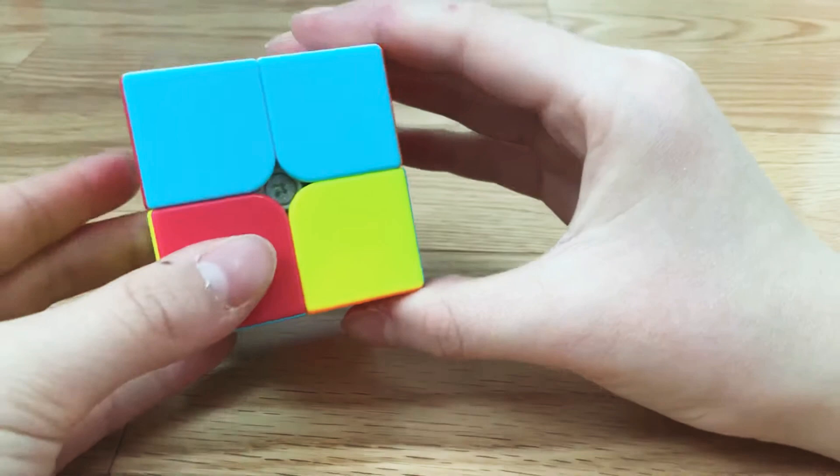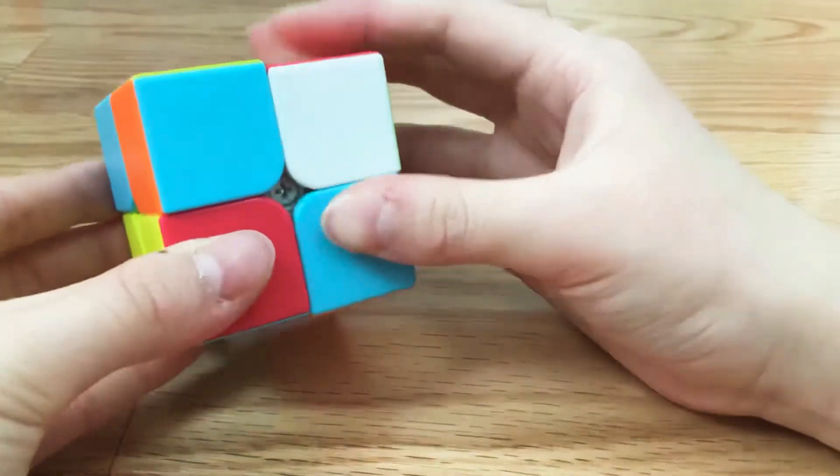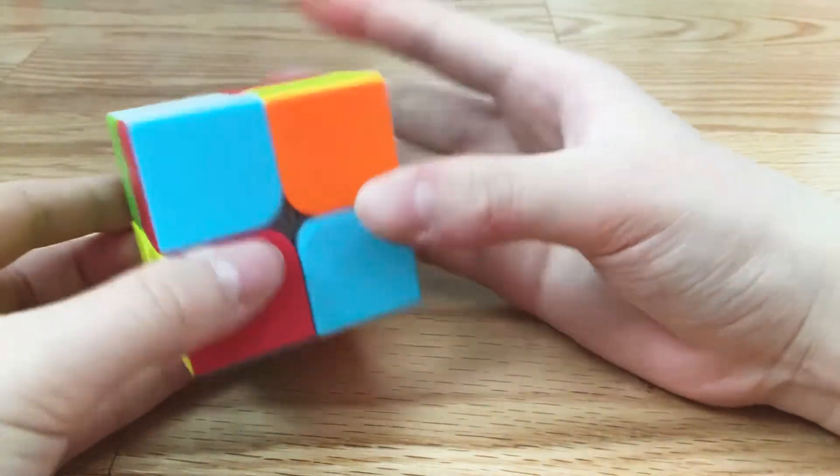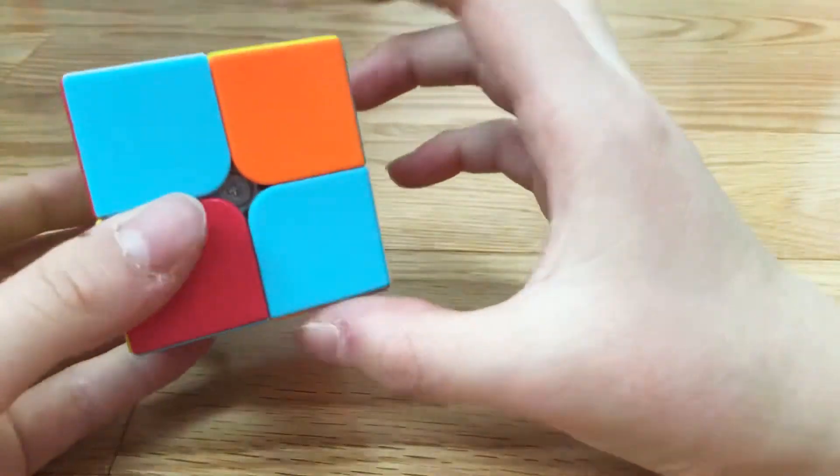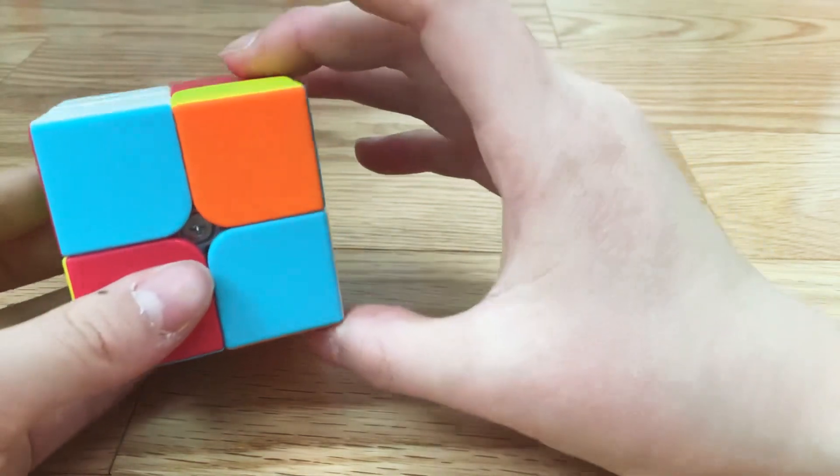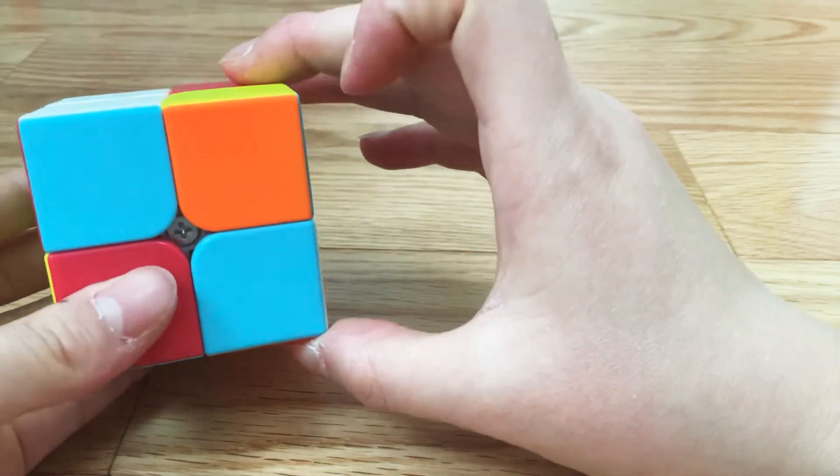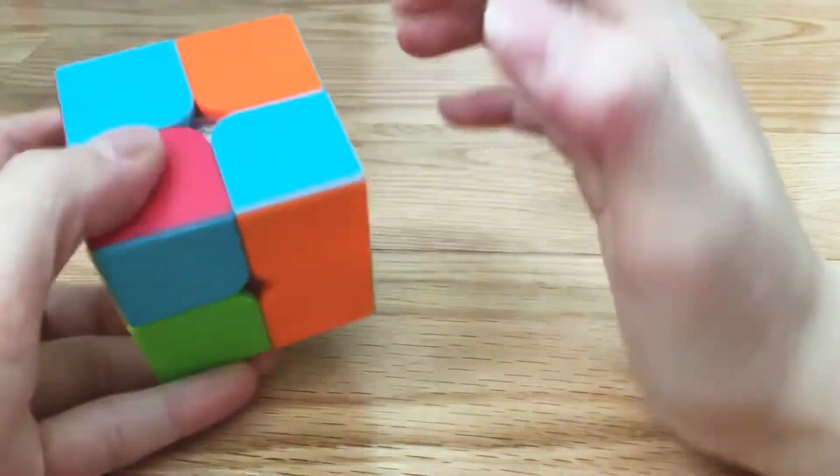So all you have to do is this, this, that, that. So now it's kind of messed up, but don't worry, it will get solved later. So you're gonna keep repeating this tiny algorithm with four moves until this yellow part is down here.